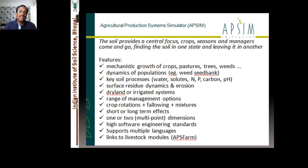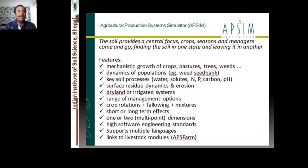APSIM features mechanistic growth of crops, pastures, and trees, with the mechanisms involved in growth and development being simulated by this model, including dynamics of populations with the seed bank. Key soil processes are also accommodated, including water, solute transport, nitrogen mineralization, carbon simulations, phosphorus, and soil acidity or pH.